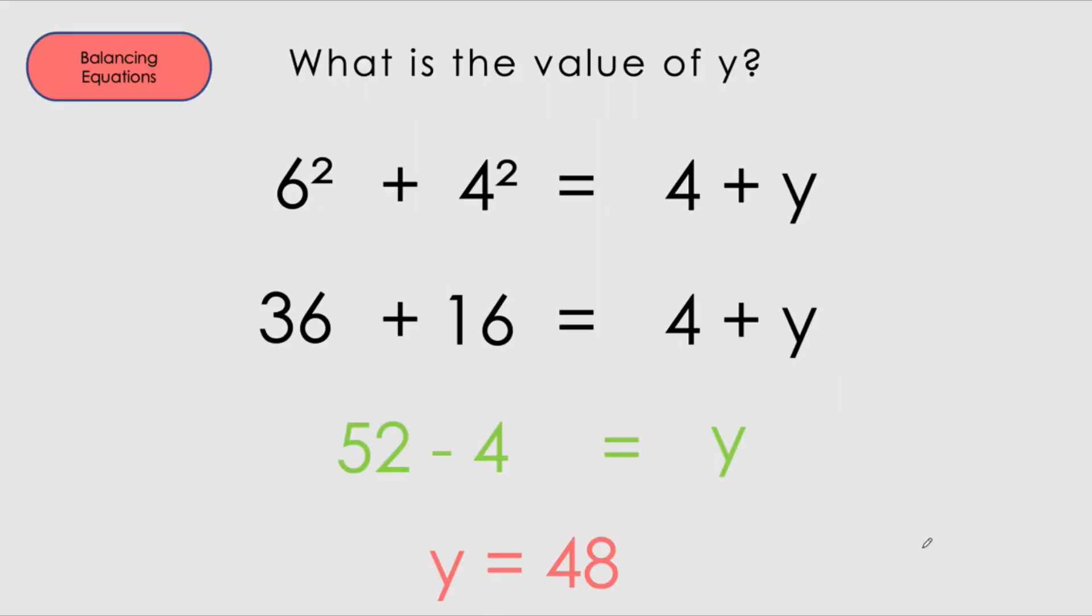All right. Now, what is the value of y? So we've got 6 squared plus 4 squared equals 4 plus y. So 6 squared gives us 36, 4 squared gives us 16. We keep the right hand side the same. Now, this is 52 minus 4. So 36 plus 16 gives us 52.